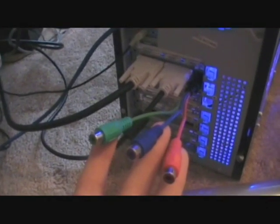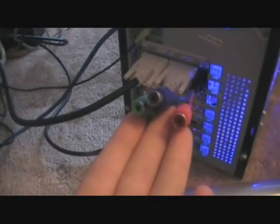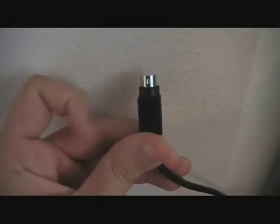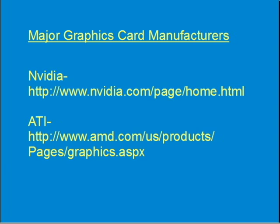Some graphics cards have television outputs, such as component video or S-video. The two major graphics card manufacturers are NVIDIA and ATI. Both of these companies are highly respected and produce quality products. The setup examples I'll be showing are for an NVIDIA card, because this is the type that I own. Follow the links on this page to find out more information on NVIDIA or ATI.